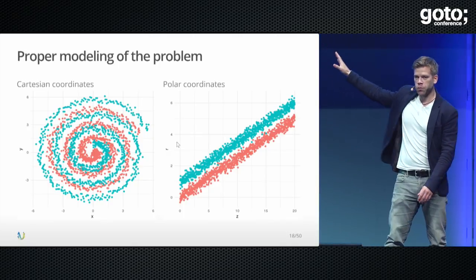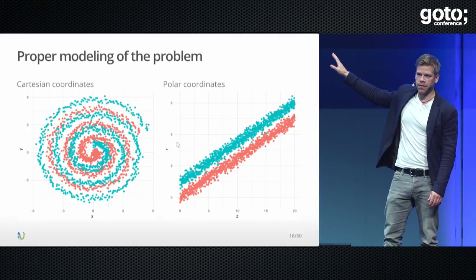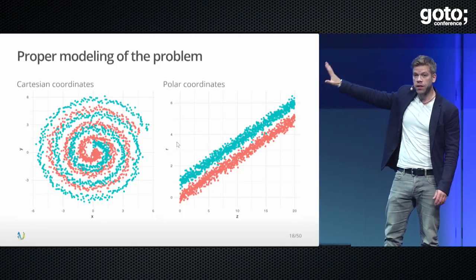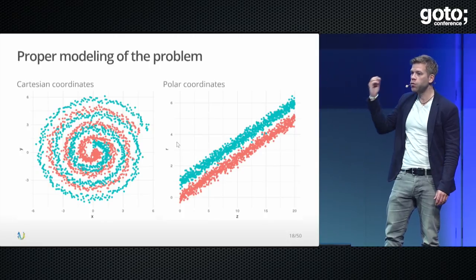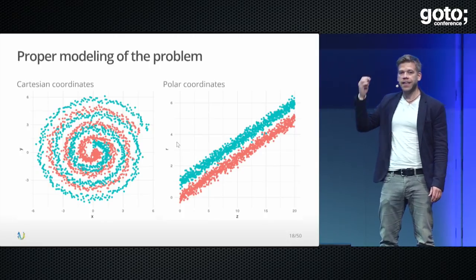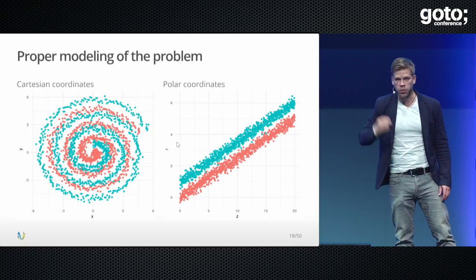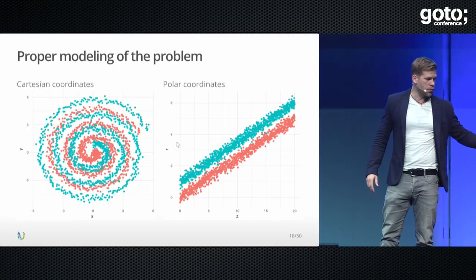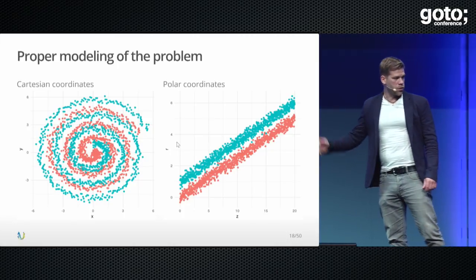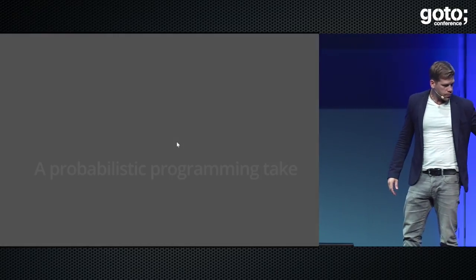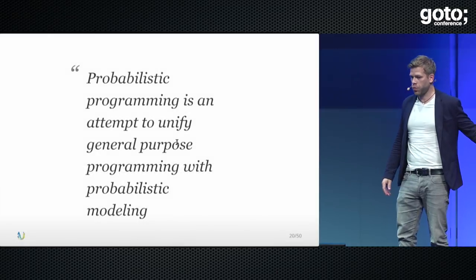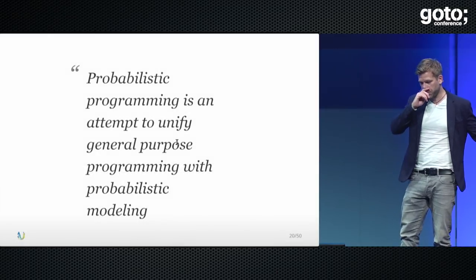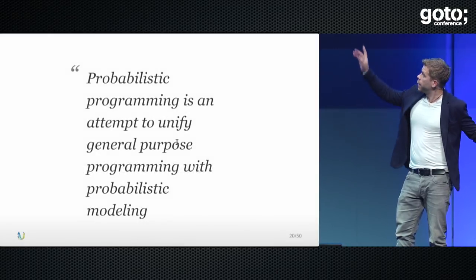A neural network would never realize the polar coordinate transformation, nor would any other machine learning algorithm. It's impossible because that's not their goal — they don't work that way. I can't be angry at them for not solving that; I just want to show you a take on probabilistic programming.